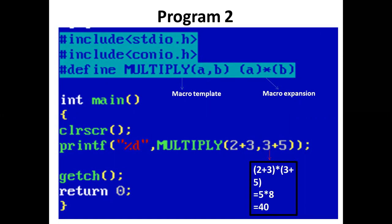In the main function, the printf statement prints MULTIPLY(2+3, 3+5). The macro is expanded as (2+3)*(3+5).